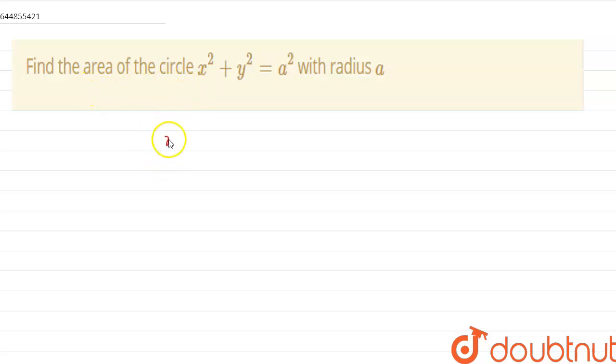So we are given a circle x² + y² = a². From the equation we can see that the center is (0,0) and radius is equal to a.